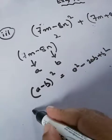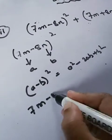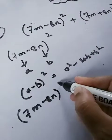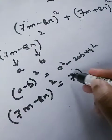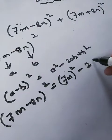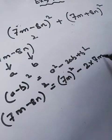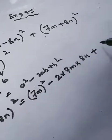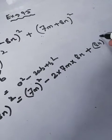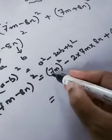So let's solve this. Now in place of a what is there? 7m. So we'll do 7m whole square minus 2ab means 2 into 7m into 8n plus what is b? 8n, so we'll do the square of 8n whole square.